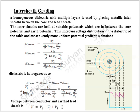The next method of grading is inter-sheath grading. In this method, a homogeneous dielectric with multiple layers is used by placing metallic inter-sheaths between the core and the lead sheath, held at suitable potentials between the core potential and earth potential. This improves voltage distribution in the dielectric and gives a more uniform potential gradient. Applying the G_max equation to each layer: G₁_max = V₁ / ((d/2) × log(d₁/d)), and similarly for G₂_max and G₃_max. Since the dielectric is homogeneous, all gradients are equal, and the total voltage between conductor and earth is V = V₁ + V₂ + V₃. Dear students, that was all on underground cables — hope you understood the topic, and if you have any questions, you can ask in the comments.